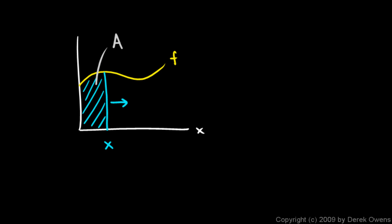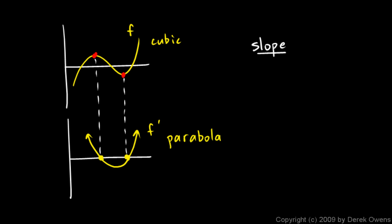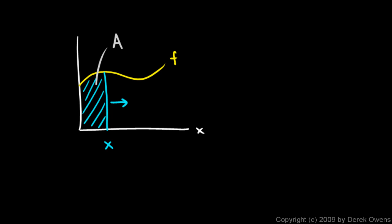Now here's the key idea: that area is a function of x. If you think about x moving to the right and the area growing, clearly how big that area is depends on how far to the right this line has moved. Area is a function of x. This means the area will have a different value for every value of x — just as our graph of f has a different slope at every point, the area under the graph has a different value at every point.